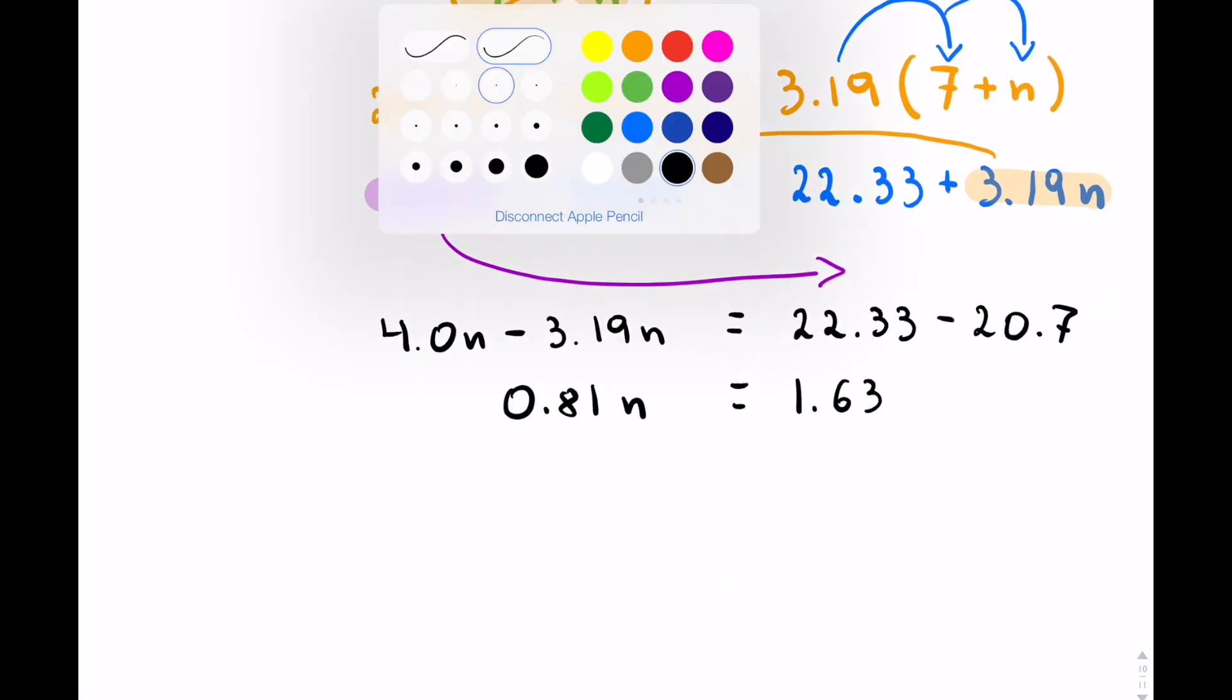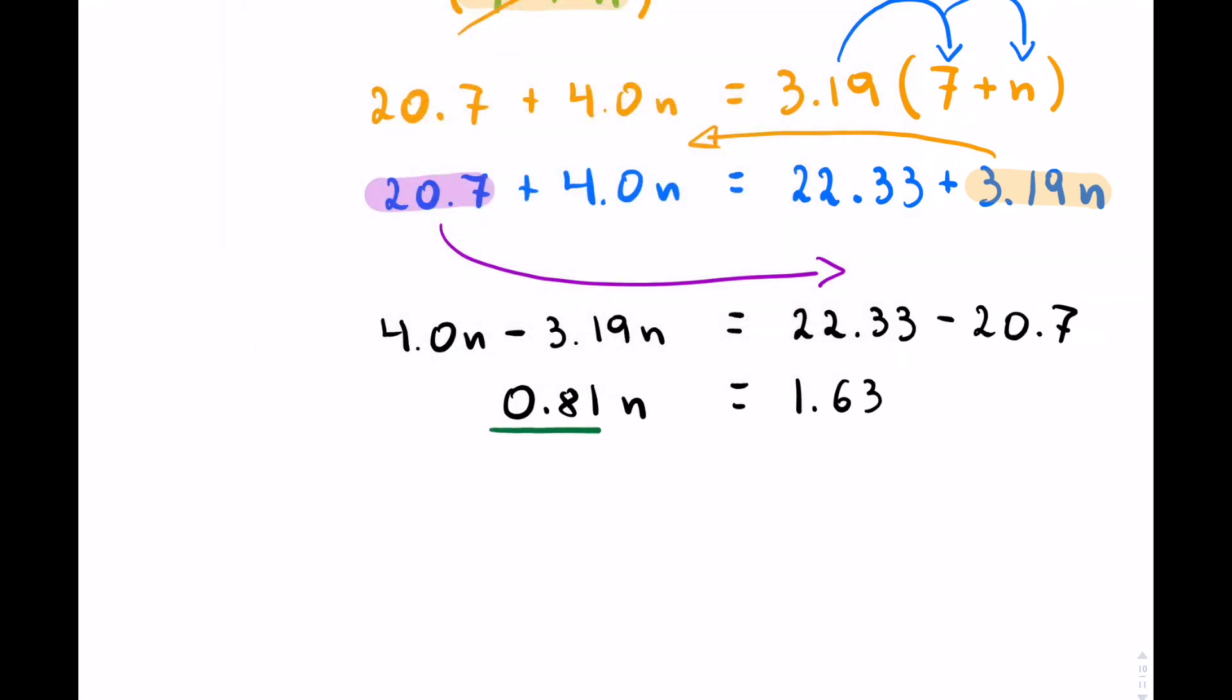Now finally, to solve the entire thing, we'll divide both sides. Cancel that off. Now you can punch that into your calculator and you'll get 2.0 and so on. That is your final answer.